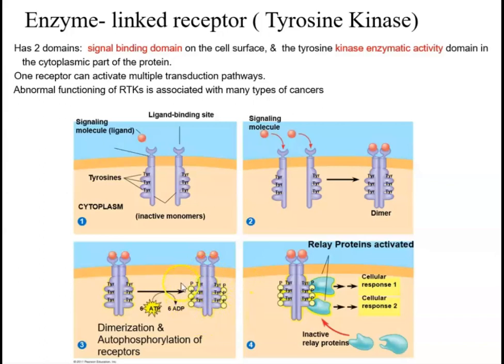This is important because the phosphorylated tyrosines are highly reactive. Phosphate functional groups have phosphorus surrounded by four electronegative oxygen atoms, making those groups very reactive. As a result, these parts of the enzyme activate other relay proteins downstream in a phosphorylation cascade, and eventually a specific cellular response is triggered.